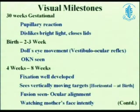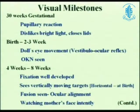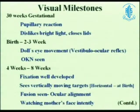These are the basic visual milestones which a normal kid achieves. By 30 weeks of gestation, there is pupillary reaction and the baby dislikes bright light and closes its lids. At birth and within 2 to 3 weeks, there will be a doll's eye movement because of VOR, and OKN is seen. At 4 to 8 weeks, fixation becomes developed. These are all physiological ranges — we do not talk in absolute terms. When talking about milestones, there is always a range; there is no cutoff.